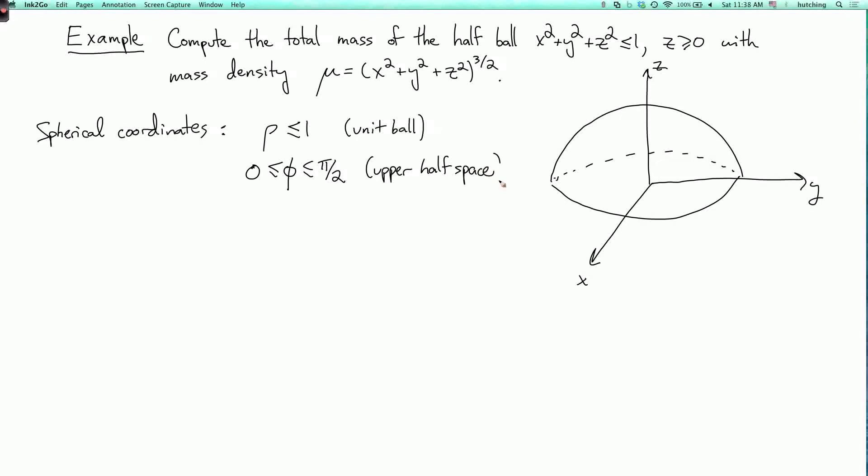The intersection of the upper half space and the unit ball is the region we want. And theta can be anything. And to cover the region exactly once, we'll have theta go from 0 to 2 pi.